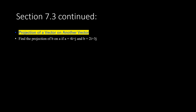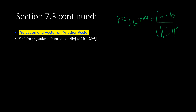For example, if we want to find the projection of B on A, this is the formula: it's A dot B divided by the magnitude of B squared, and then you have to multiply it with the vector B.